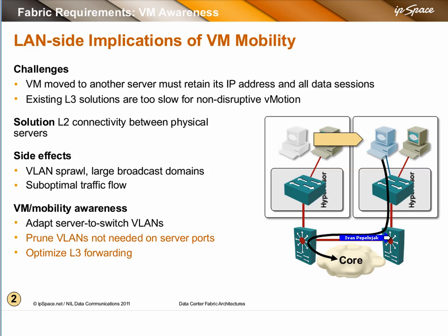The problem with both solutions is that today we cannot terminate them on any physical appliance. You can terminate a VLAN on a load balancer, a router, a firewall, or wherever else you wish it to be terminated — but you can't do the same thing with VXLAN or NVGRE. To escape out of a layer 2 virtual subnet implemented with one of those technologies, you have to use a virtual machine with two interfaces. That's the problem with VXLAN today. It's perfect for fully virtualized environments but doesn't work so well when you have to terminate virtual networks on physical appliances.